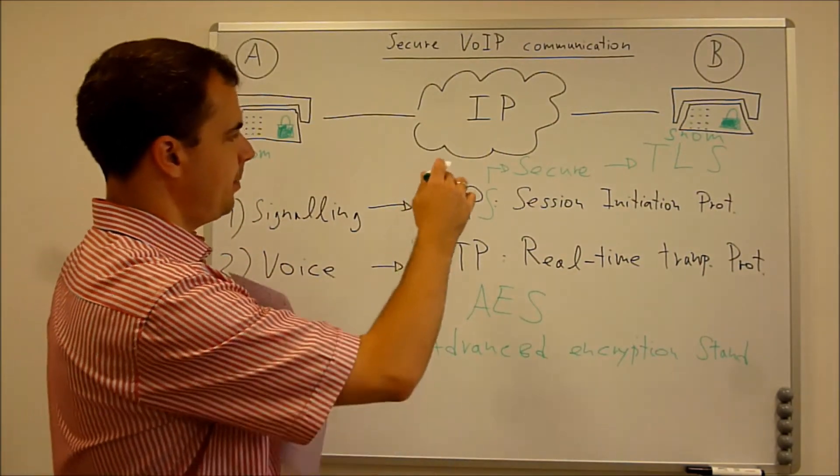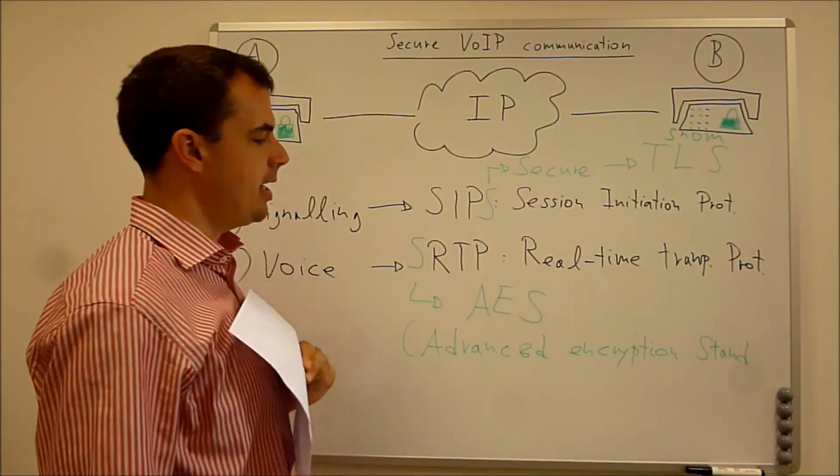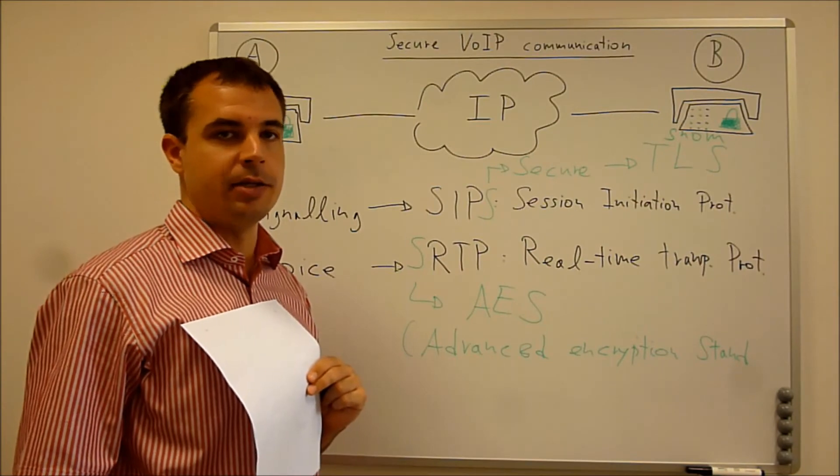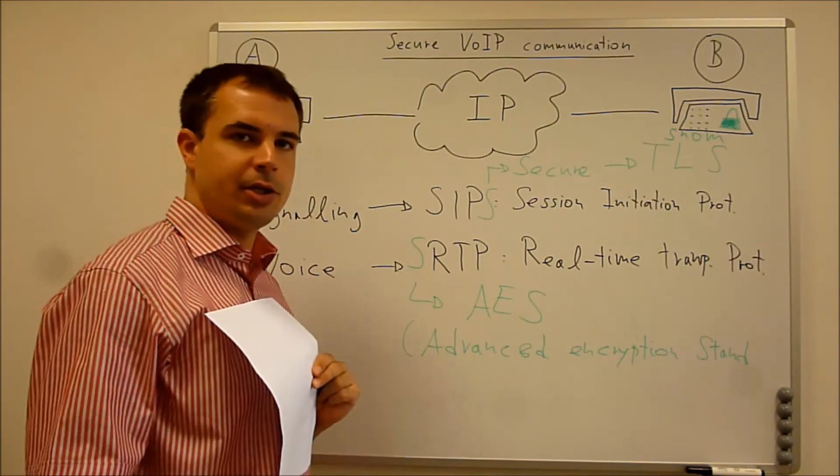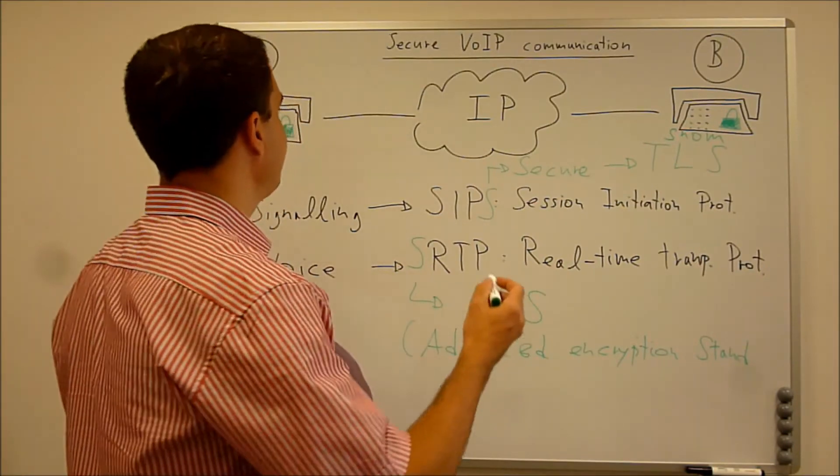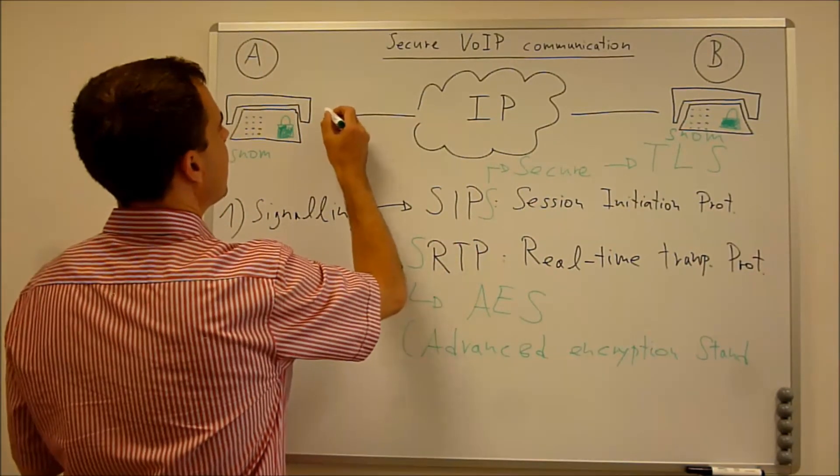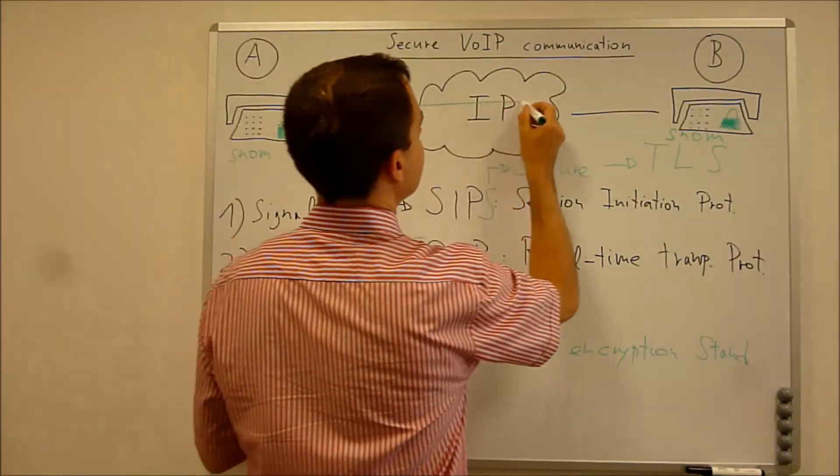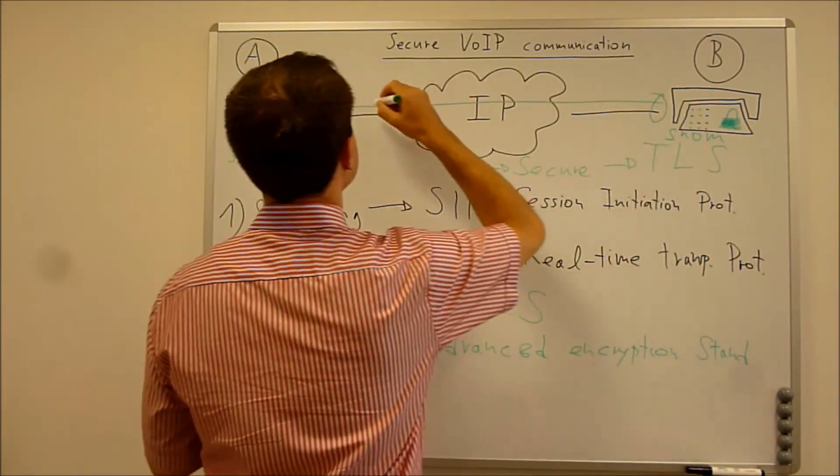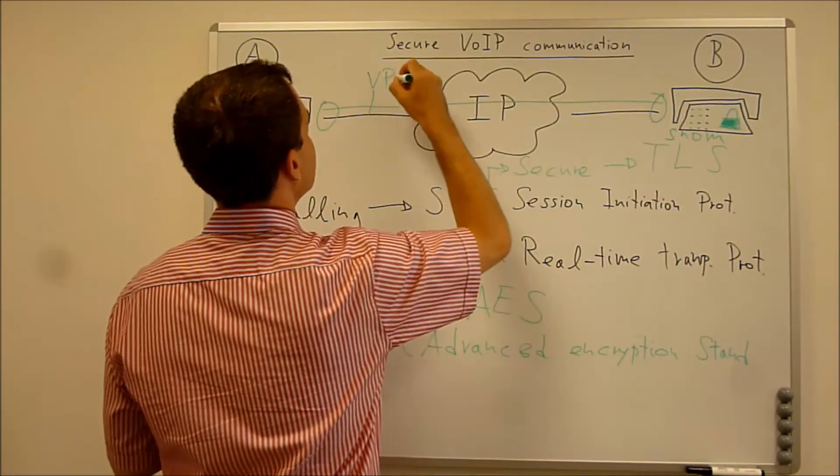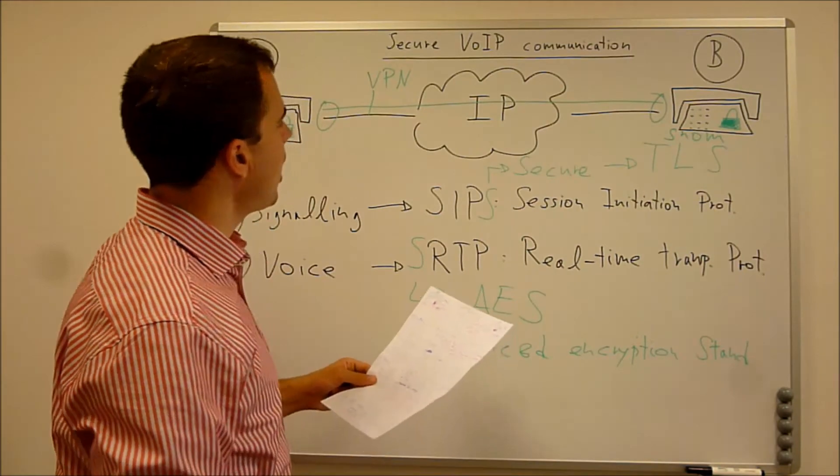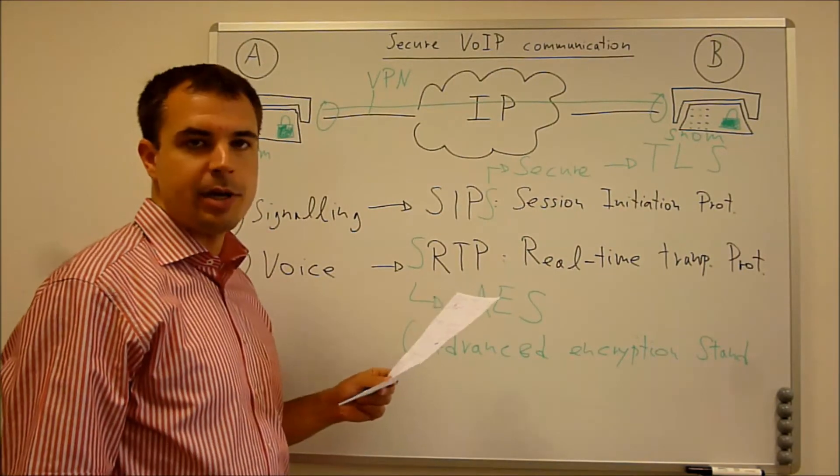Another option beside the TLS and AES is to use a VPN channel. So that is another even more secure option that is supported by the SNOM IP phone. So that means there is a tunnel, a VPN tunnel connection between both VPN virtual private network. So this extends a private network across a public one.